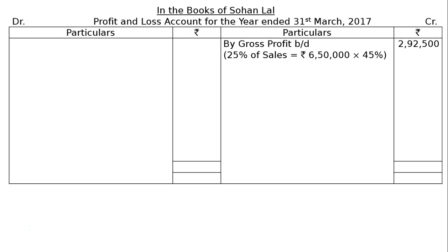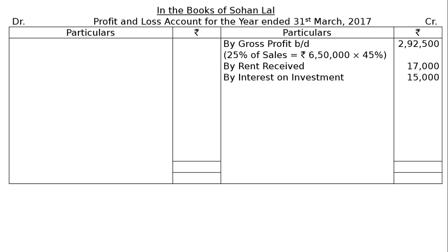On the credit side: By Rent Received rupees 17,000; By Interest on Investment rupees 15,000. These are the income entries. On the debit side: To Salaries and Wages — this is predominantly wages with a negligible amount of salaries — rupees 30,000.